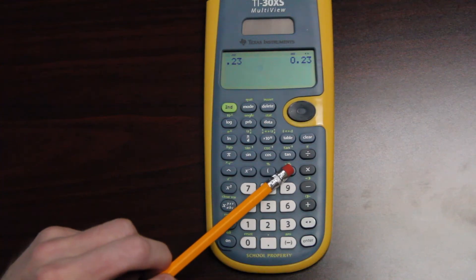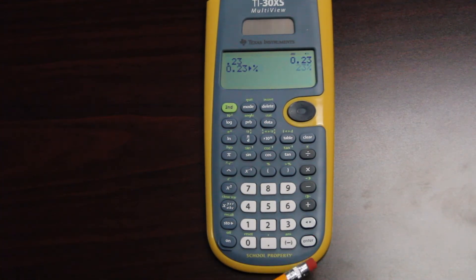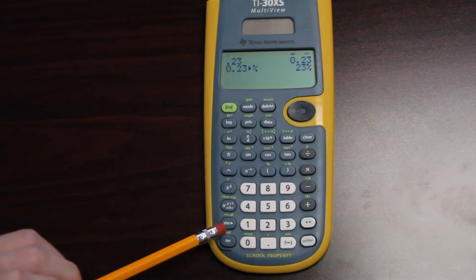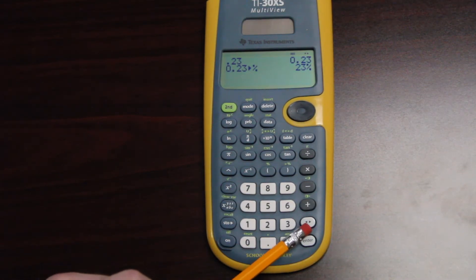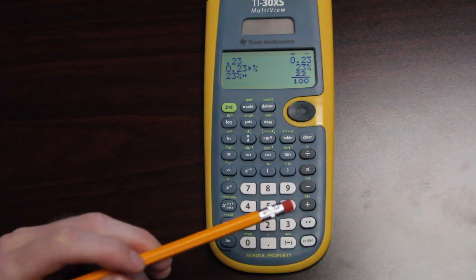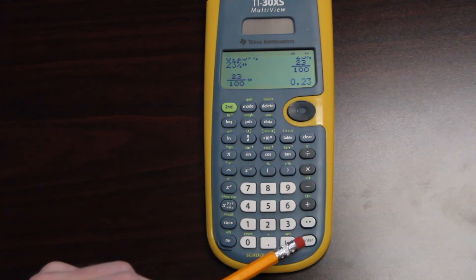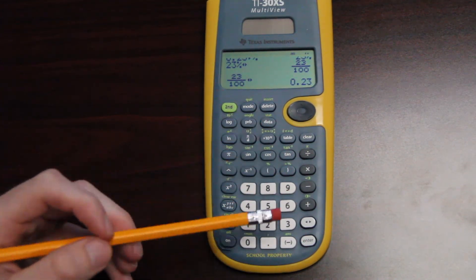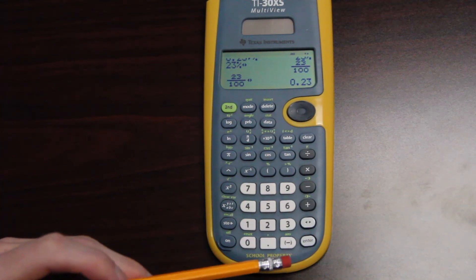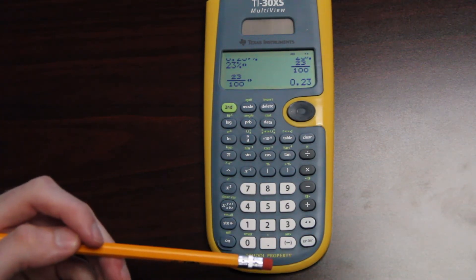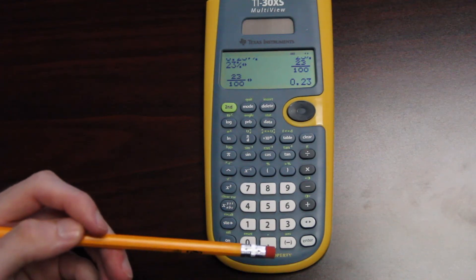So I hit the second key, and then percent, and I hit enter. And it tells me that 0.23 is 23%. If I want to go back, just use this arrow key left and right, and it turns it to a fraction for me, turns it back to a decimal for me, and we already know the percent. So this little arrow key left and right is really good. It will show you the different formats of the number and the ways in which it can be represented.